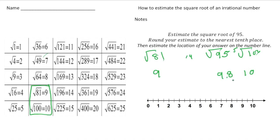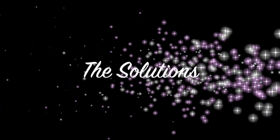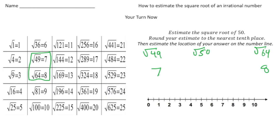When you're done, hit play and you can see how you did. Welcome back — let's see how you did. For this problem we want to estimate the square root of 50, which is an irrational number. I know the square root of 50 is going to be between the square root of 49, which is 7, and the square root of 64, which is 8. The square root of 50 is only 1 away from 49 and 14 away from 64, so it's going to be much closer to 7 than to 8.